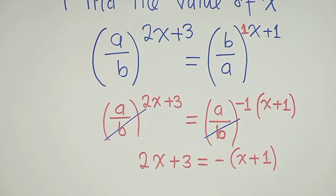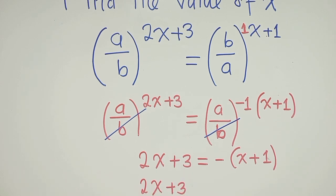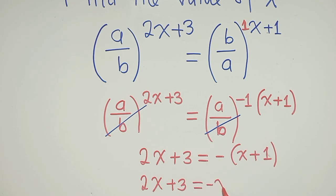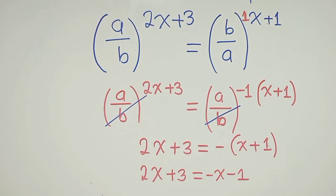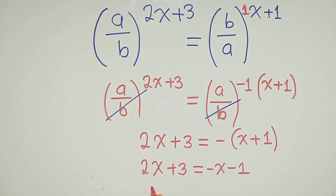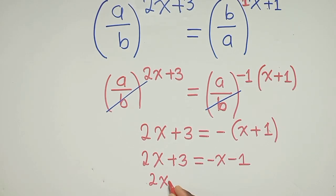So now we get rid of the brackets. 2x plus 3. So here it will be equal to negative x minus 1. We group the like terms.